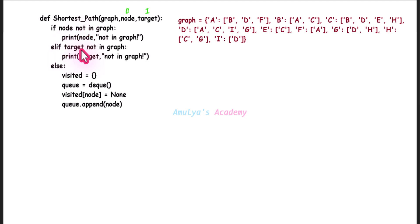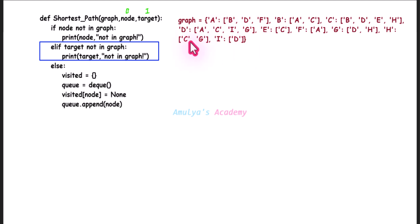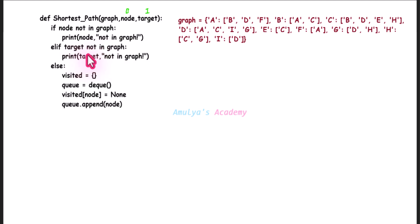Next let's move on to the next condition: elif target not in graph. Target is I — I is also present in the graph, so this condition also becomes false. It won't execute its body; it will move on to the next part, that is the else block.